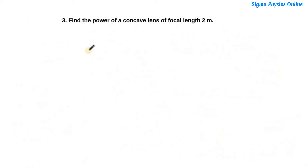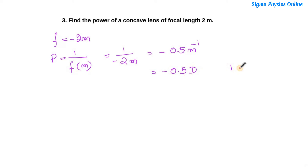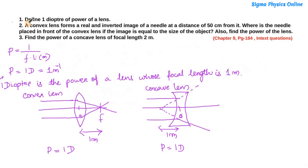The third question: find the power of a concave lens of focal length 2 meters. The power of a concave lens is negative, so focal length is minus 2 meters. Power equals 1 divided by minus 2 meters, which is minus 0.5 meter inverse, which is minus 0.5 diopter. So the power of this concave lens is minus 0.5 D.